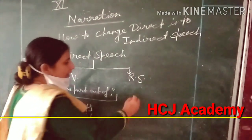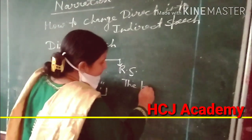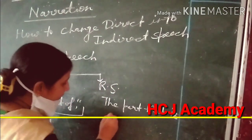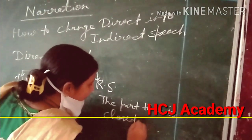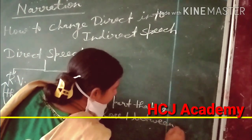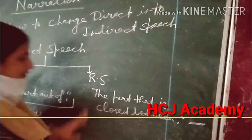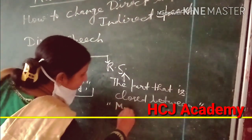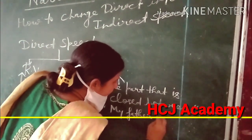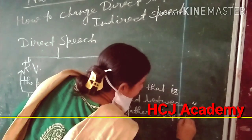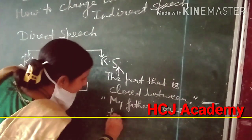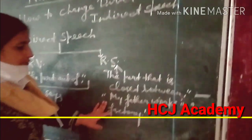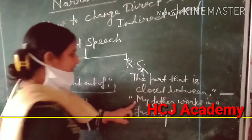What is reported speech? The part that is enclosed between the inverted commas is known as the reported speech. For example, 'My father works in a factory' — that is the reported speech, because this part is closed between the inverted commas.